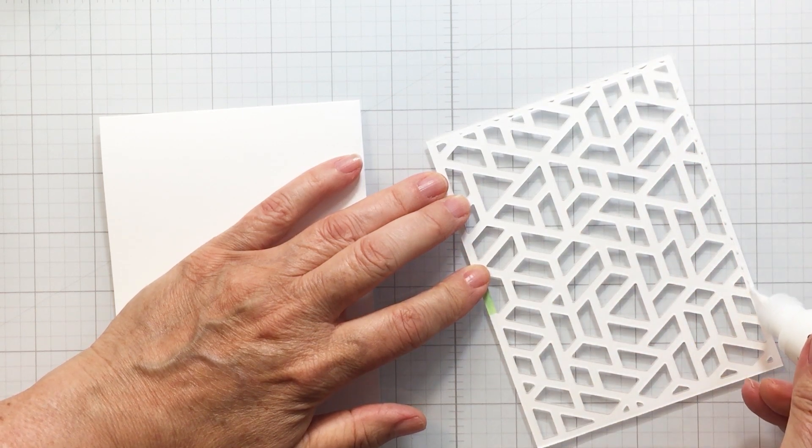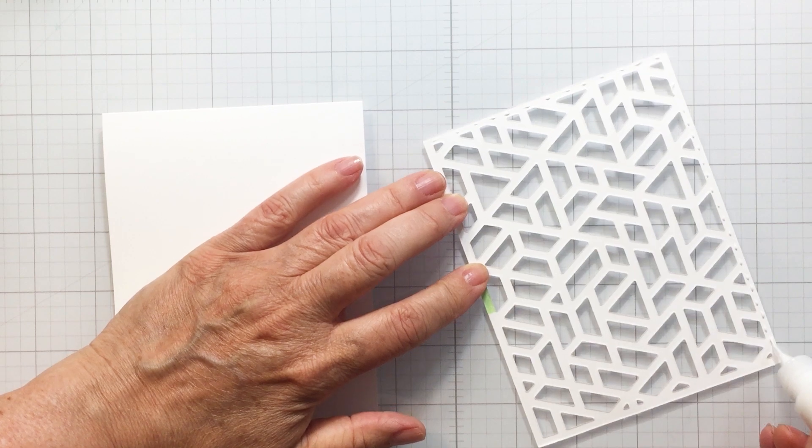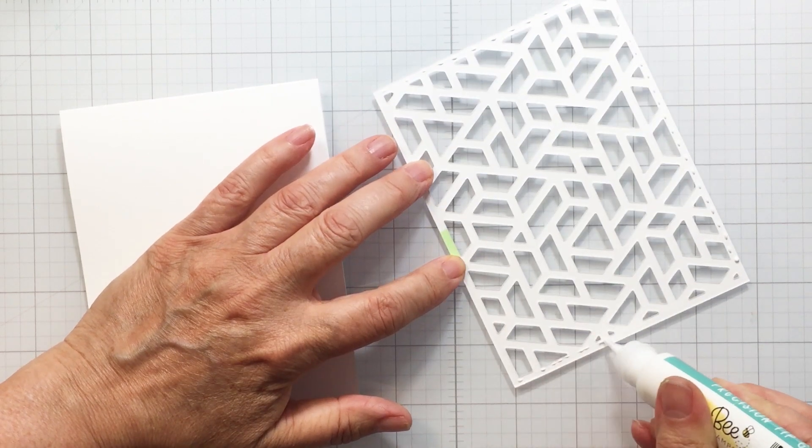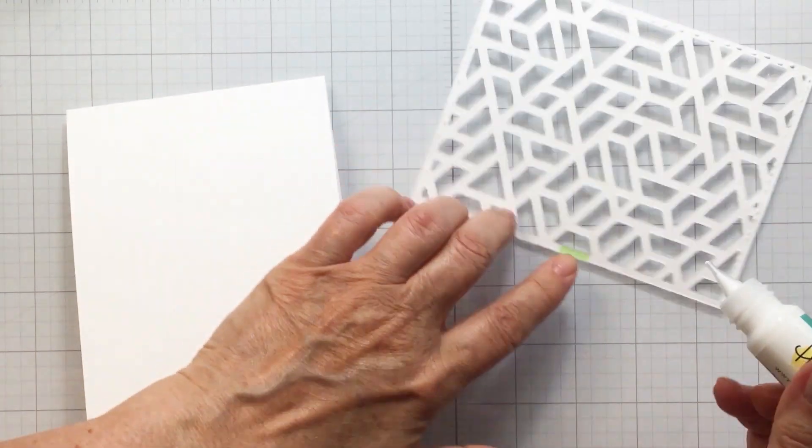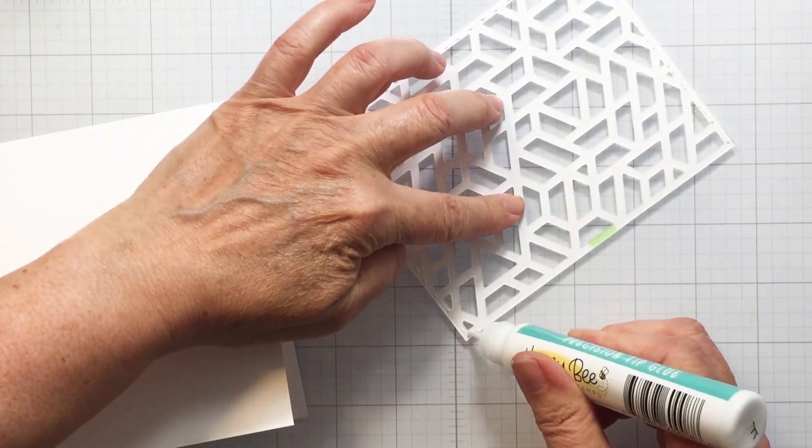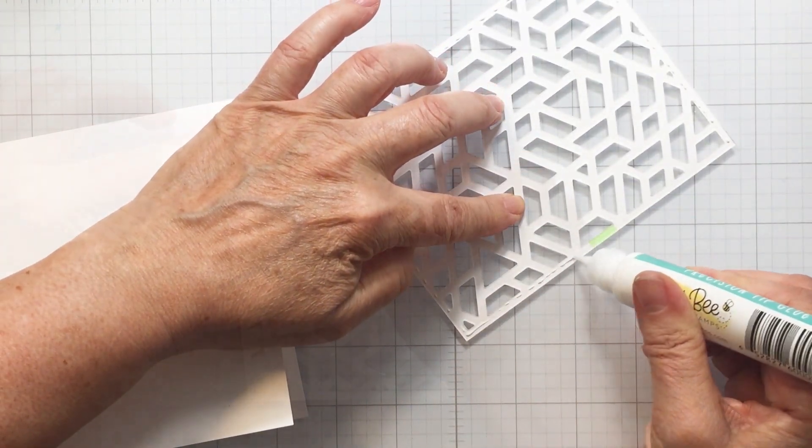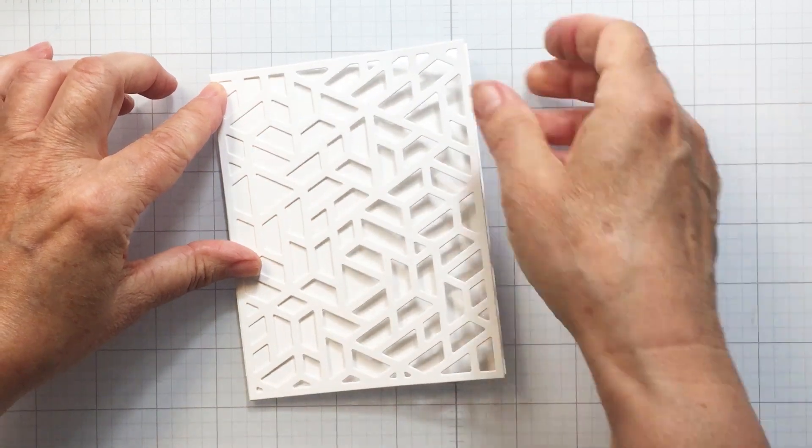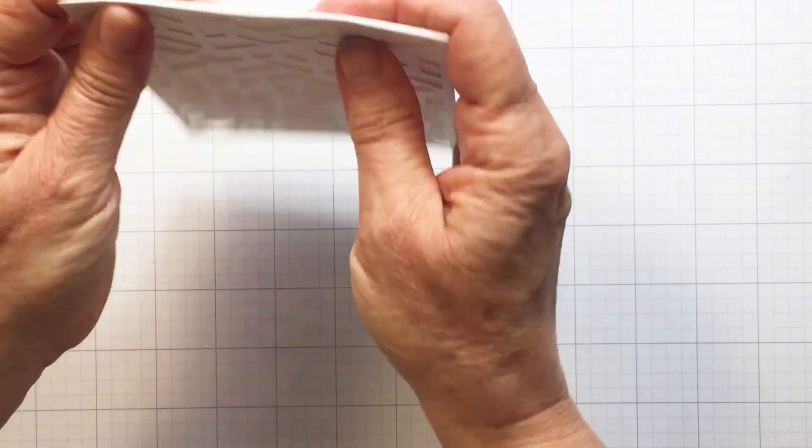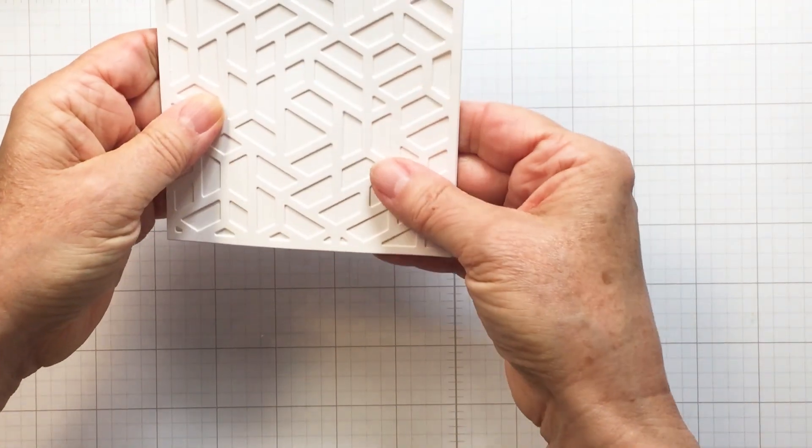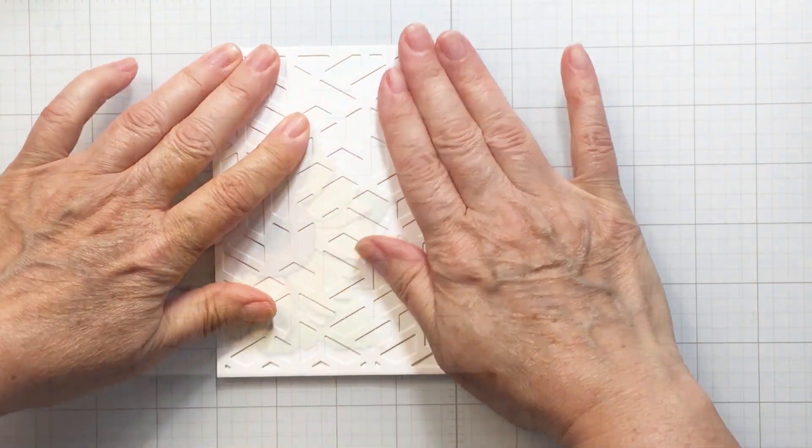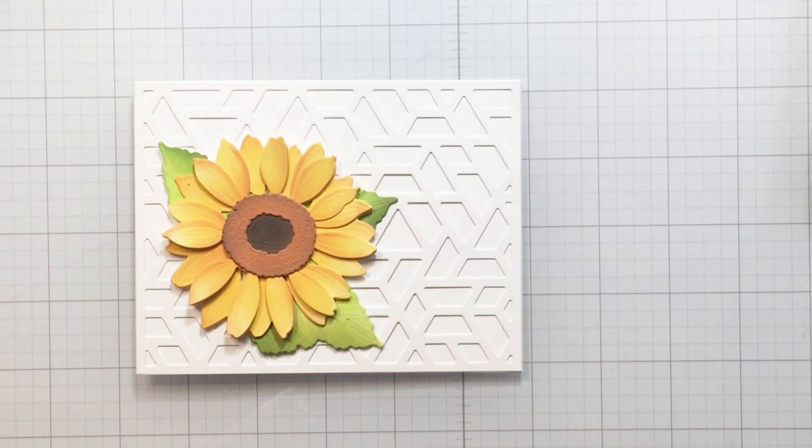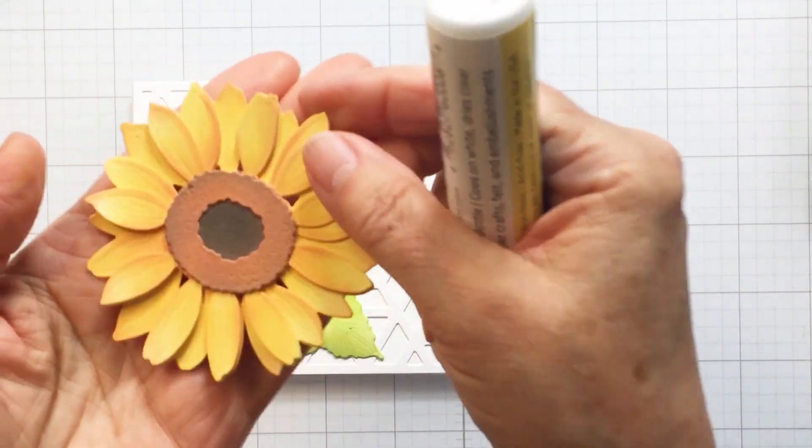You can just see that I have die cut this out of some white cardstock and I'm going to add that to a white cardstock base. I'm going to use my base in a little bit of a different orientation. You'll see that as my card process continues here. So I'm going to get this all adhered down to my card base and then you can see how I am going to add my sunflower.